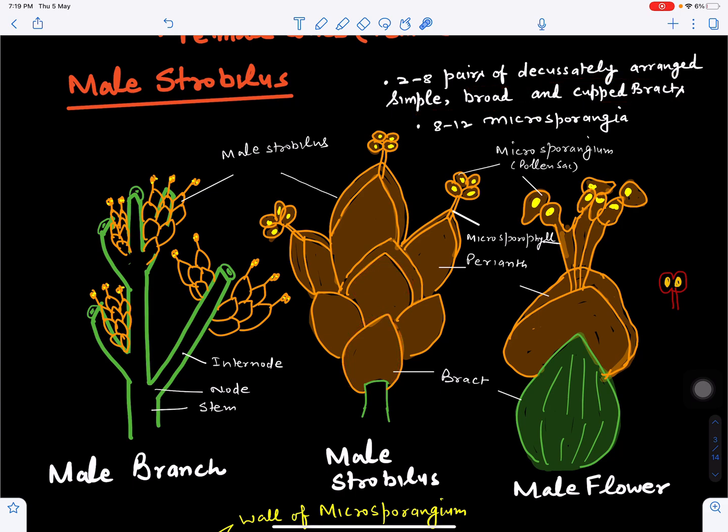The upper bracts are fertile and bear stalks called microsporangiophores. Each microsporangiophore bears microsporangia; the number can vary from eight to twelve.